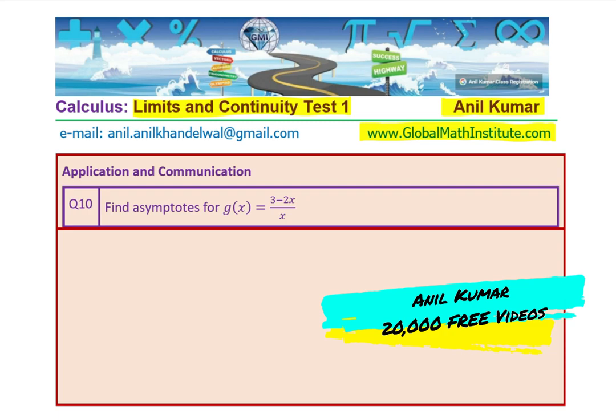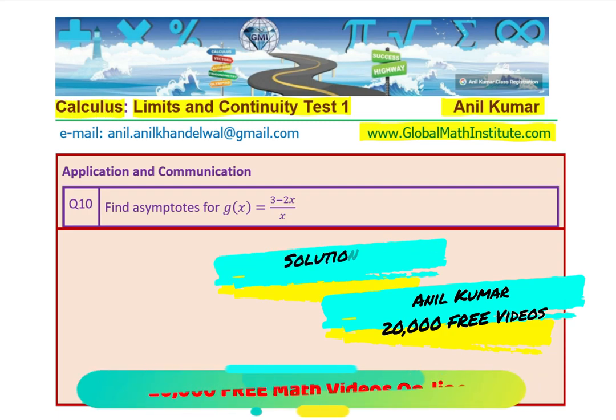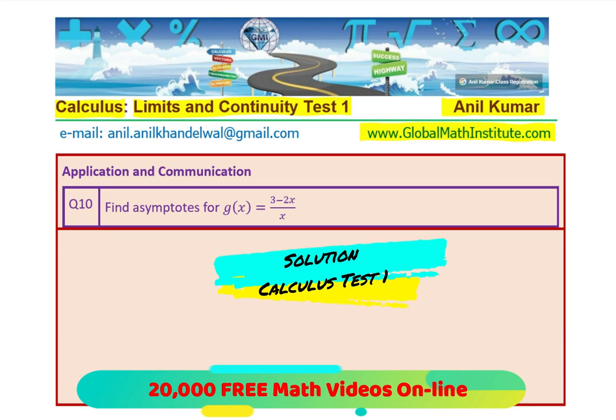In test 1, calculus, we ask questions based on prerequisites for calculus. This question comes from that place. Question number 10: Find asymptotes of g of x equals 3 minus 2x over x.